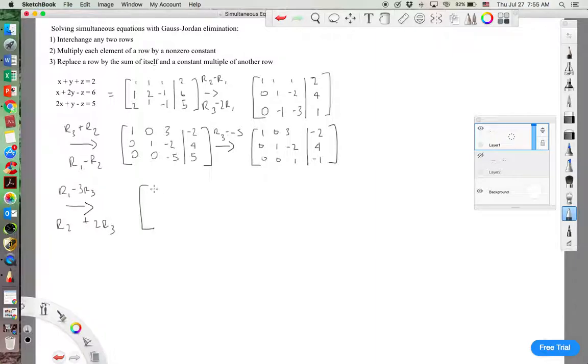And that should take us to the identity matrix, 1, 0, 0, 0, 1, 0, and 0, 0, 1. And then on this side, we have 1, 2, negative 1.